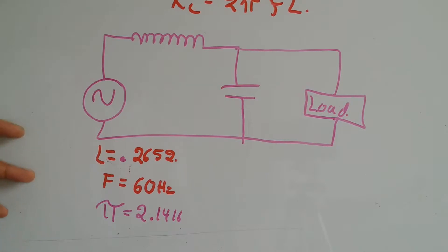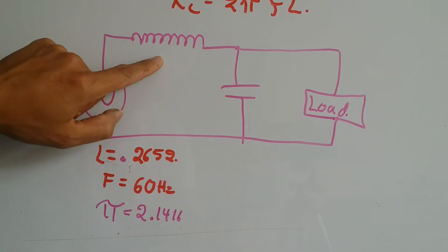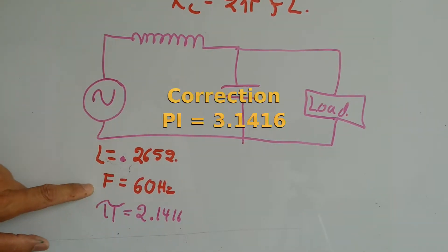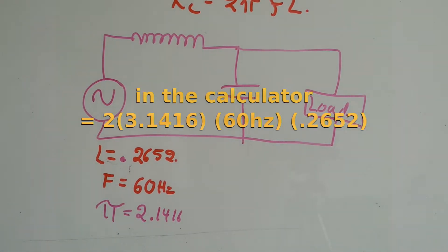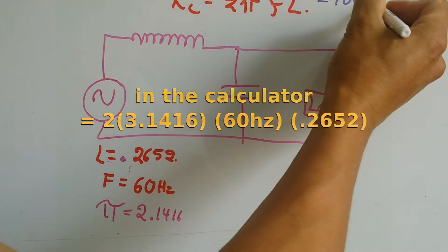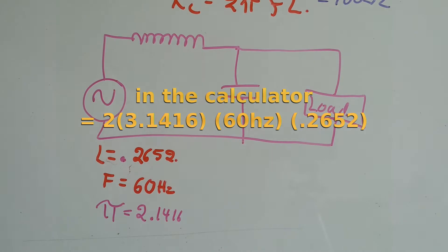In this circuit, if I were to have an inductor that has an inductance of 0.2652 and a standard frequency of 60 Hertz, and π is always given by the calculator, we could get a resistance of 100 ohms just by doing that calculation.